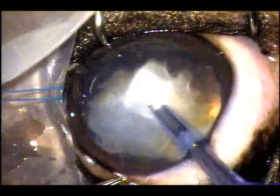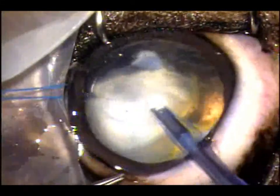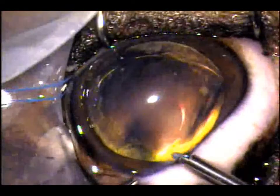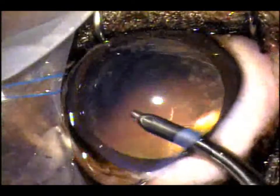This is the lens being phacoemulsified, and this is a mature cataract in a Boston Terrier. After phacoemulsification, during irrigation aspiration,